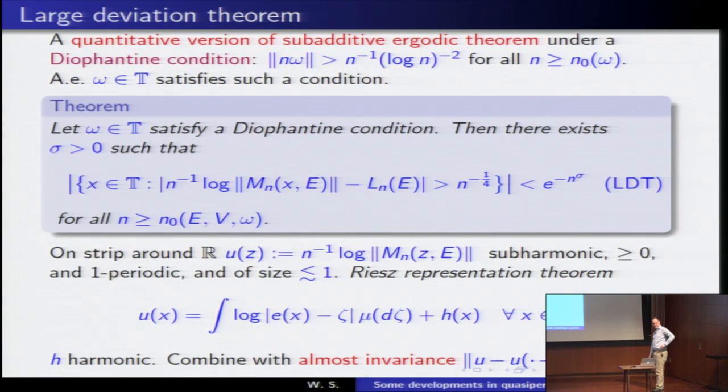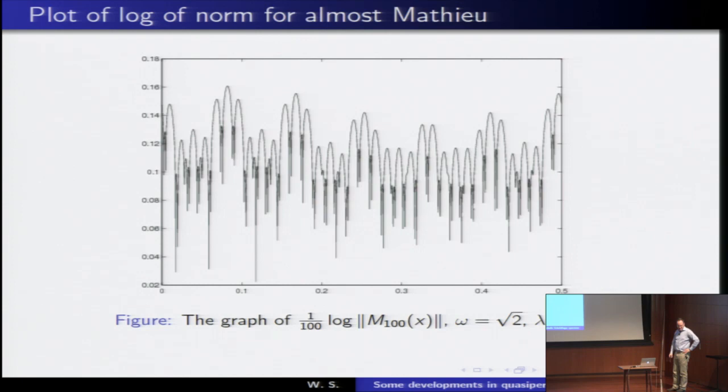Now, to show you a picture of what such a function would look like, this is what it would look like for the almost Mathieu operator that Svetlana had on her slide, this cosine potential. You see that you can have all of these exceptional points where you can become very large and negative, but you don't strike out in the positive direction, not surprisingly. And what does the large deviation theorem do? It measures the size of, if you want, the projection onto this axis of these spikes.